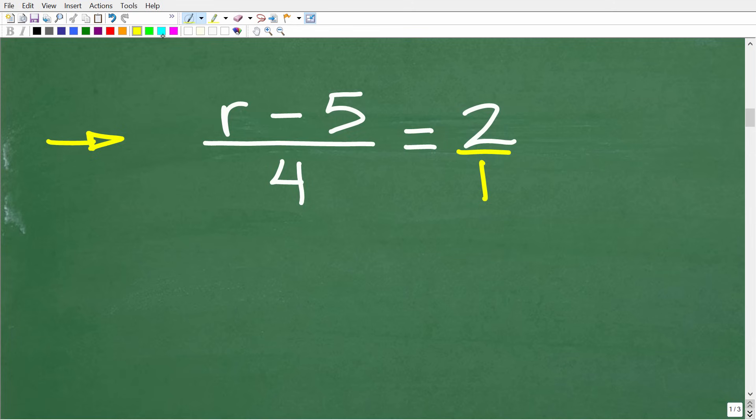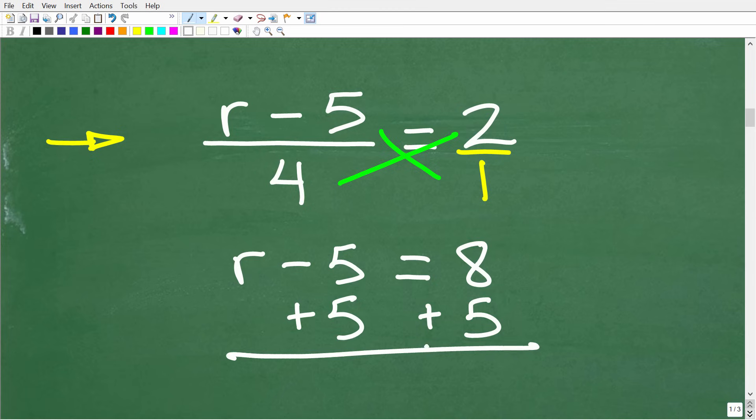So now we can use the cross product to clear the fraction. So it's going to be 1 times r minus 5, and that'll be equal to 4 times 2. All right, so let's go ahead and do that. So 1 times r minus 5 is r minus 5, and 4 times 2 is 8. Okay, so now we have r minus 5 is equal to 8. So to solve for r, all we have to do is add 5 to both sides of the equation, and r is equal to 13. So again, 13 is the correct answer, but this is one approach, is to use the proportion method.